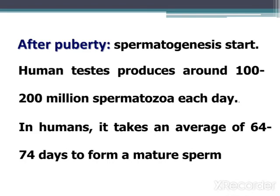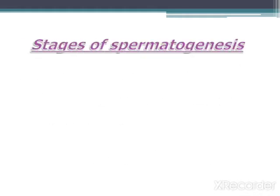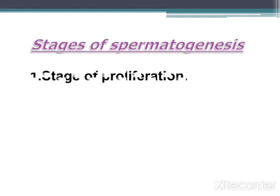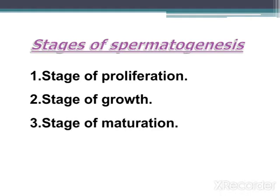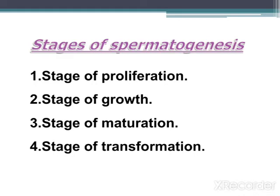In humans, it takes an average of 64 to 74 days to form a mature sperm. There are four stages to form a mature sperm: the first stage is the stage of proliferation, the second is the stage of growth, the third is the stage of maturation, and the last is the stage of transformation.